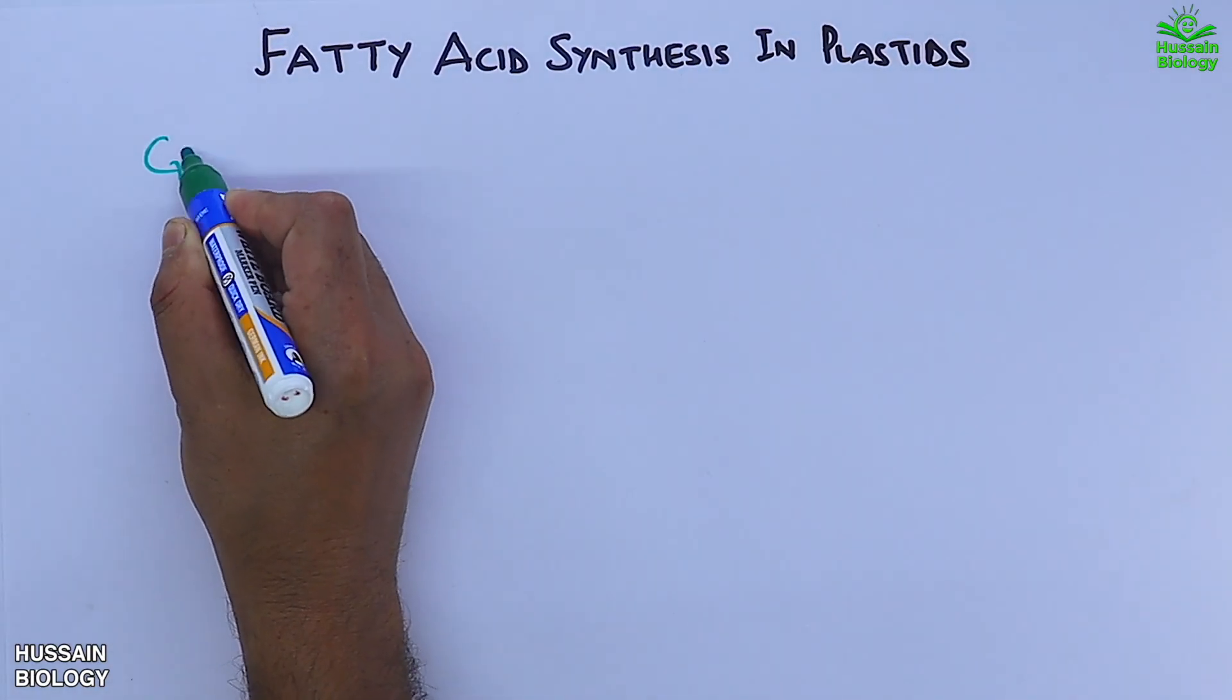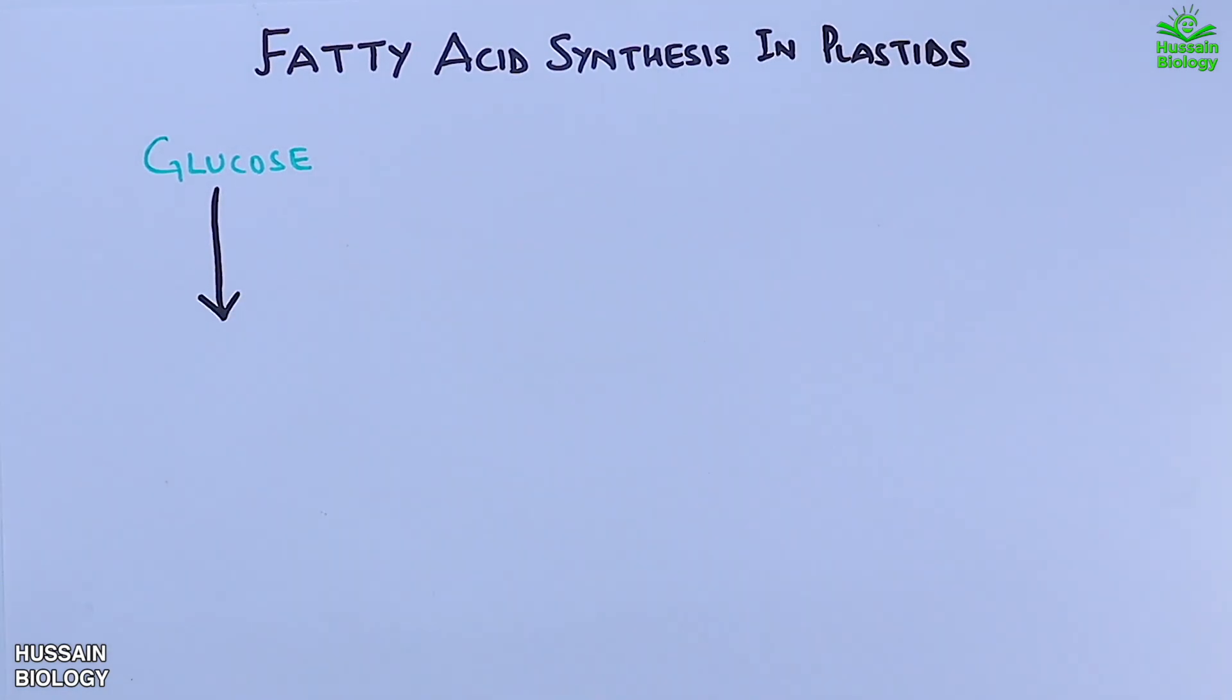In this video, we'll be discussing fatty acid synthesis in plastids. We know the basic metabolism of glucose, where glucose is transformed through a series of reactions into pyruvate through a process called glycolysis.